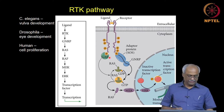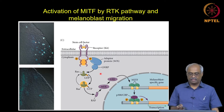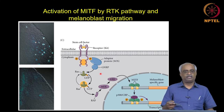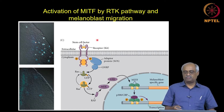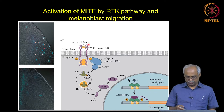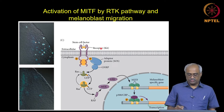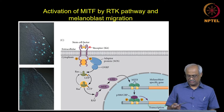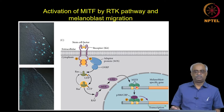We continue to other signaling. The next one is a small variation on RTK, just to illustrate that RTK pathway ligands are diverse. For example, stem cell factor when it binds through a receptor tyrosine kinase in melanocytes - the receptor here is kit, which we have already seen as an example, and MITF we have also seen as an example of a transcription factor.